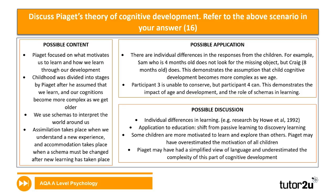For the 16-marker AO1 on Piaget's theory: focus on what motivates us to learn and how we learn through development, divided into stages. As we learn, our cognitions become more complex as we get older, and we use schemas to interpret the world. Assimilation takes place when we understand a new experience; accommodation takes place when a schema must be changed after new learning. Key terms to include are assimilation, schemas, and accommodation.